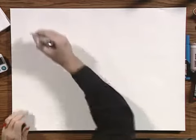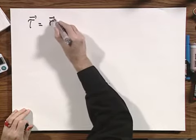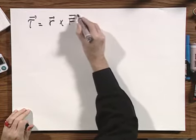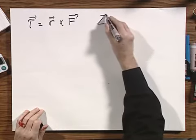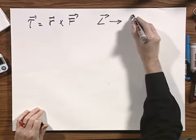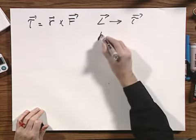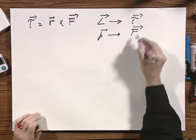If now we go to torque, torque equals R cross F. And so everything I've said holds, except that now you have to replace L by tau, and you have to replace P by F. It's the same idea.